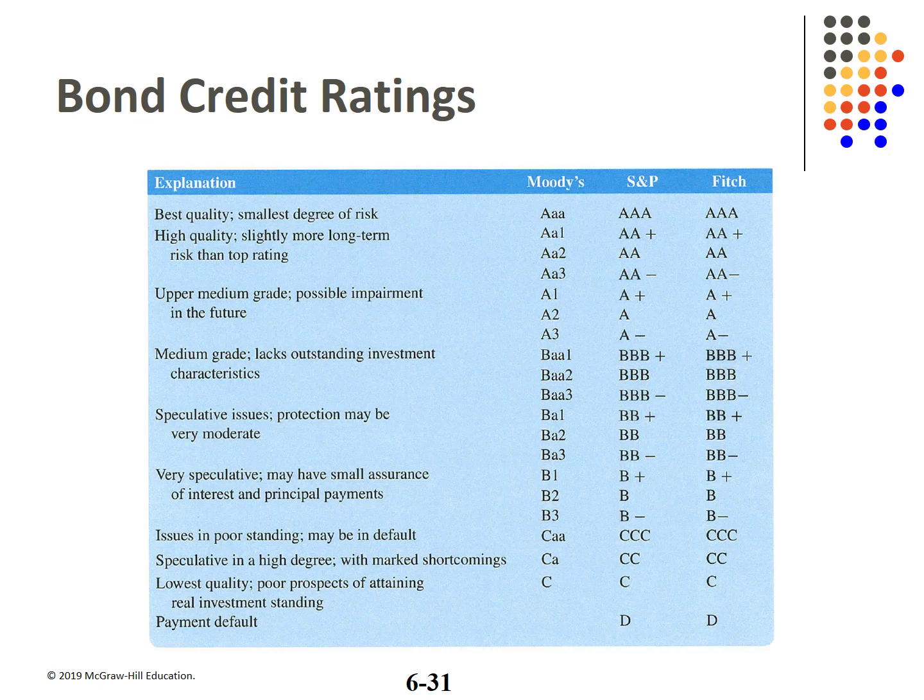This chart details the various levels of bond ratings from the three top rating agencies. The higher the bond rating, the lower the coupon rate the firm must offer. Note the lowest rating shown may be in default — payment default. Also note, bond ratings are not leading indicators, but rather tend to reflect what the market already knows.